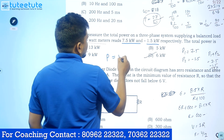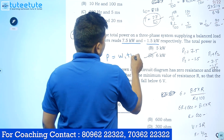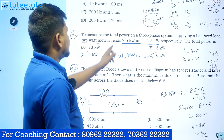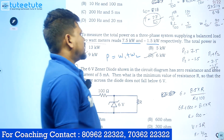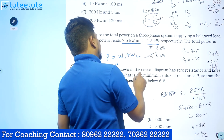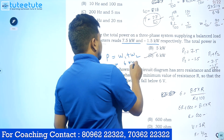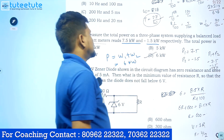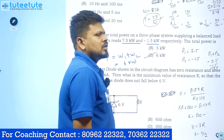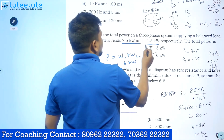Total power equals watt meter one reading plus watt meter two reading. So that's it — directly we get 7.5 plus minus 1.5, which means 7.5 minus 1.5, that is 6 kilowatt. That is the answer. You may have the doubt: how can the second watt meter read a negative value?